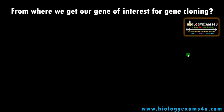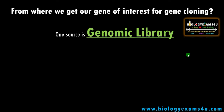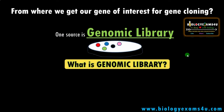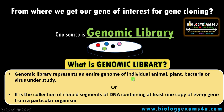From where do we get our gene of interest for gene cloning? One source is the genomic library; another source is the cDNA library. A genomic library is a library or collection of cloned DNA fragments of an organism — it represents the entire genome of an individual animal, plant, bacteria, or virus under study. It is a collection of cloned segments of DNA containing at least one copy of every gene from a particular organism.